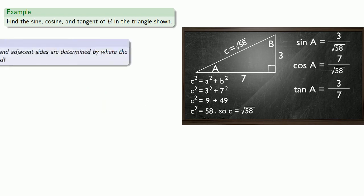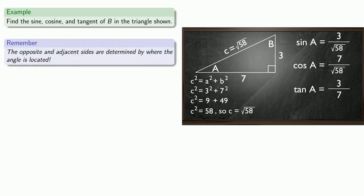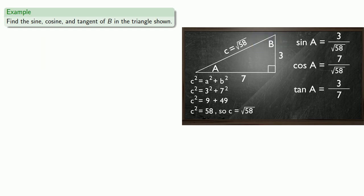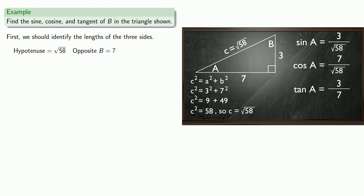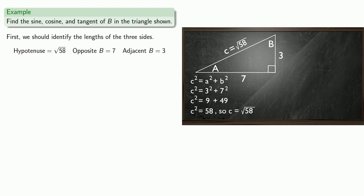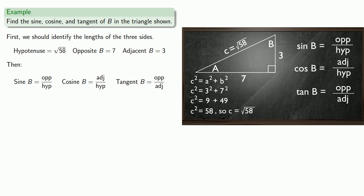It's important to remember that the terms adjacent and opposite depend on where the angle is located. If we take a look at the sine, cosine, and tangent of angle b, the opposite side and the adjacent side are different. The hypotenuse is still the side across from the right angle, that's still √58. But the side opposite b has length 7, and the side adjacent to b has length 3. Sine is still opposite over hypotenuse, cosine is still adjacent over hypotenuse, and tangent is still opposite over adjacent, so we substitute in the lengths to find sine, cosine, and tangent of b.